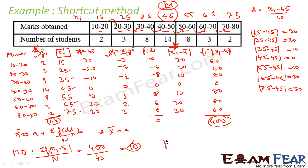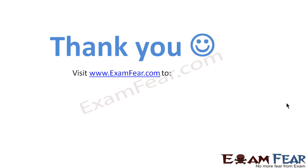So mean deviation = 400 / 40 = 10, and that is our answer. In the last example we did the same question using the longer way, and both methods give the same answer. The only thing the shortcut method helps with is finding the mean more easily: we assumed A = 45, found xi − 45, saw h = 10 was a common factor, computed d values, got Σfi·di = 0, and confirmed the actual mean is 45. Then we used the standard formula for mean deviation.